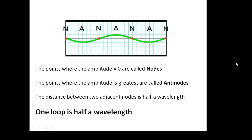A few more points about standing waves: in some places the amplitude is zero — these points are called nodes, labelled N. In some places the amplitude is at its greatest — these are called antinodes, labelled A. From node to node is half a wavelength, because that's one loop. The distance between two adjacent nodes is half a wavelength.